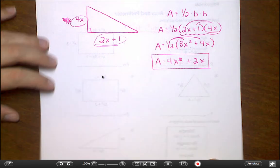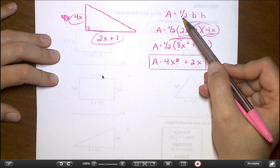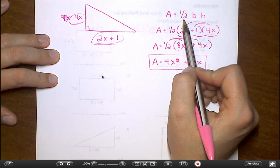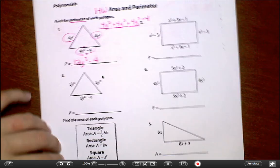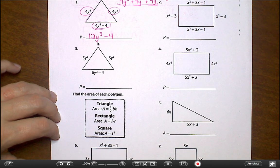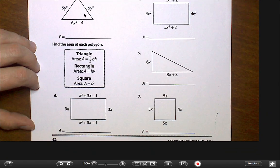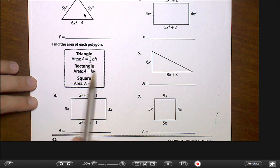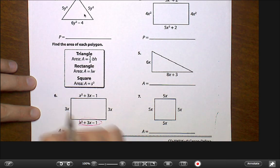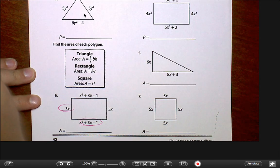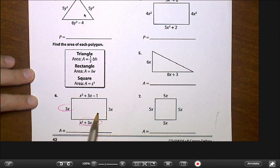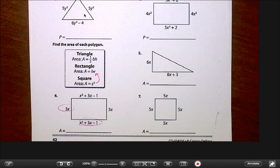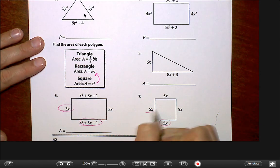Now what I do want to point out is triangles are the only one that have a 1 half in them. Or at least the only one on this page that has a 1 half in the area. When you go to do, say for example, this rectangle down here at number 6. When you go to do this rectangle down here at number 6, you won't be multiplying by 1 half. Your area there is just length times width. So you're just multiplying this times this. For your square, I know they tell you it's side squared. Remember, that's really the same as this. Just the only difference is in a square, both of your side lengths are the same. But you're still really just doing this times this.